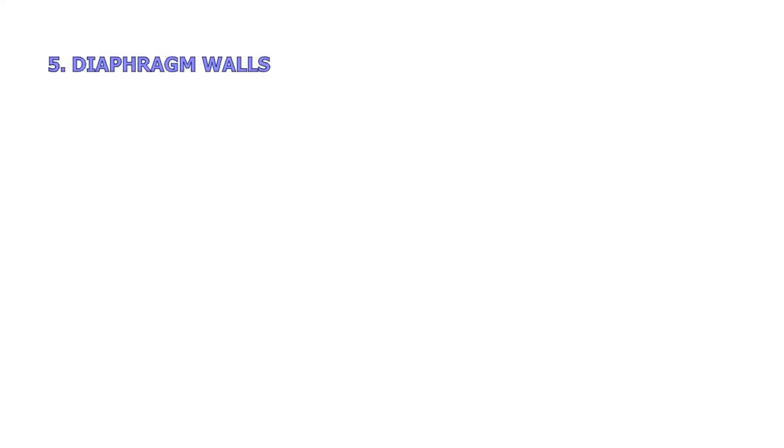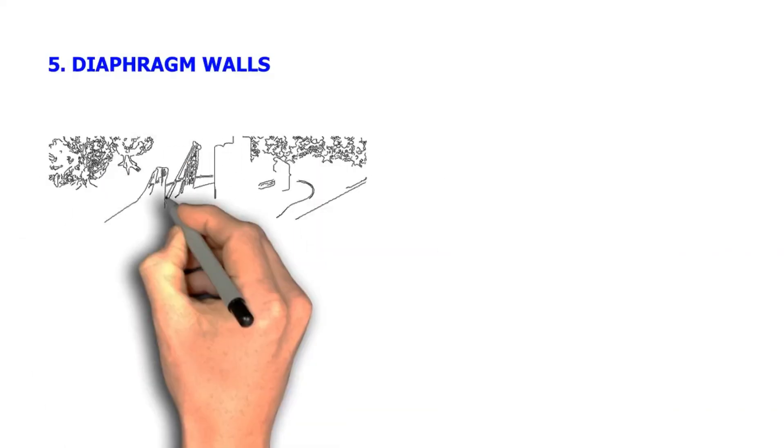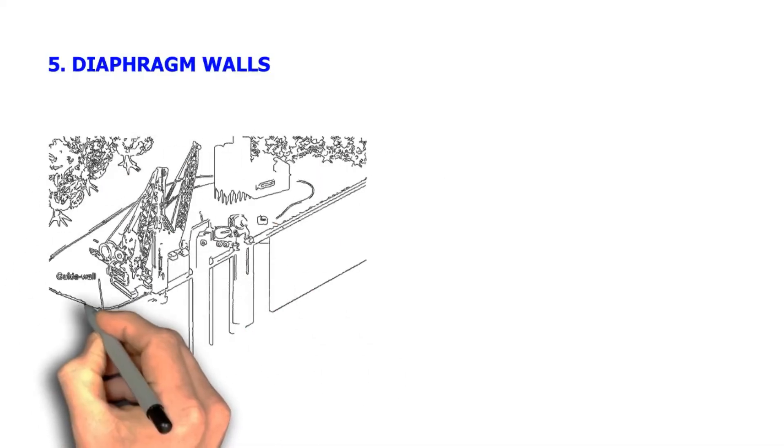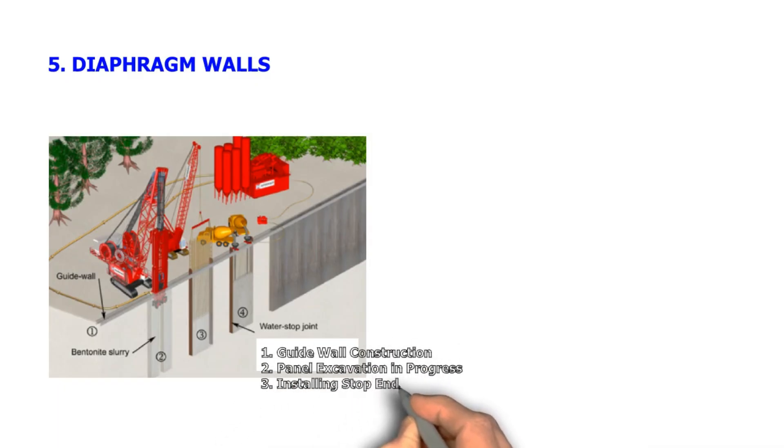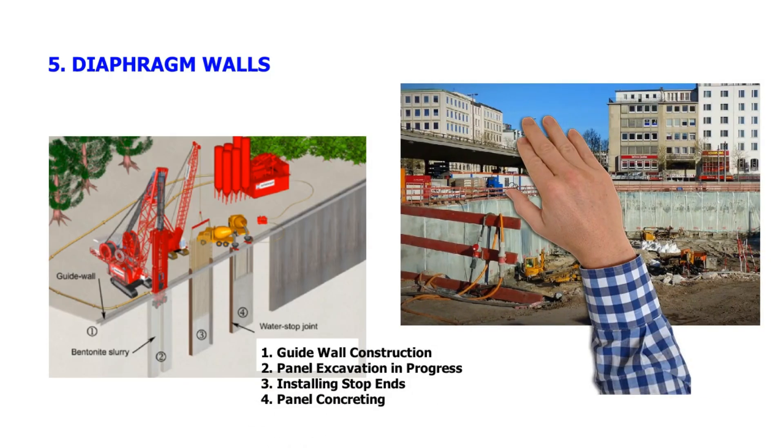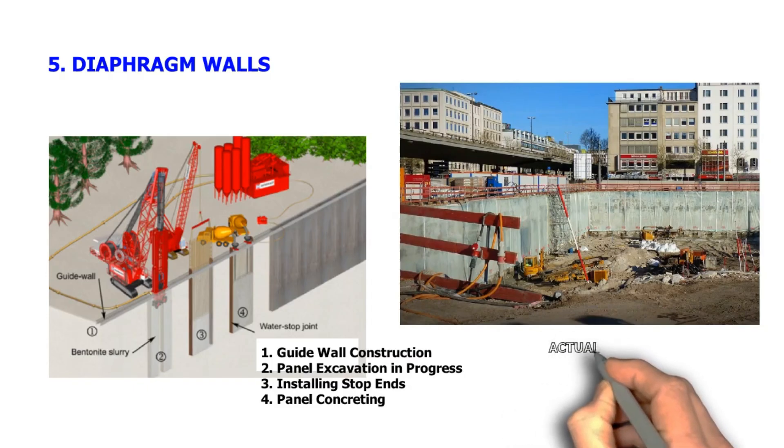Number 5, Diaphragm walls. When the excavation is too deep for the above-mentioned types of shoring, diaphragm walls can be used. It is installed in three panels of reinforced concrete installed and concreted at site. It can be a load-bearing element for a temporary or permanent retaining wall or both. For deep excavation of basements and tunnels, diaphragm wall is the best option.